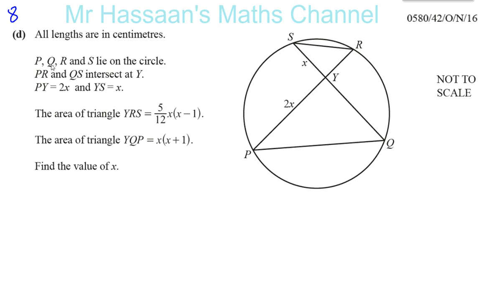All lengths are in centimeters. P, Q, R, and S lie on the circle. PR and QS intersect at Y. PY is 2x and YS is x. The area of triangle YRS is 5/12 times x(x-1). The area of triangle YQP is x(x+1). Find the value of x.